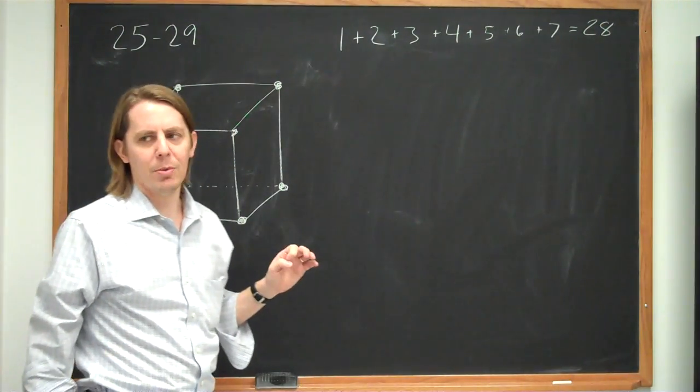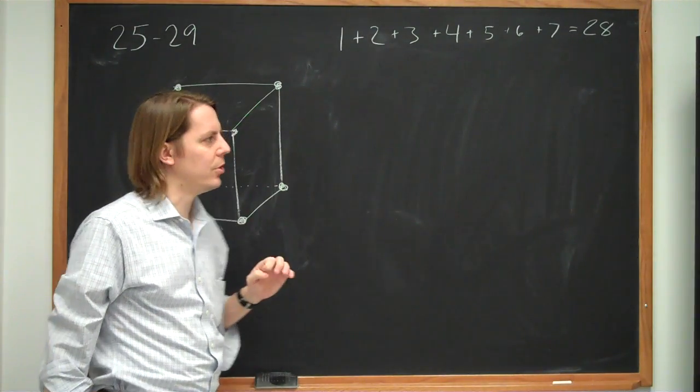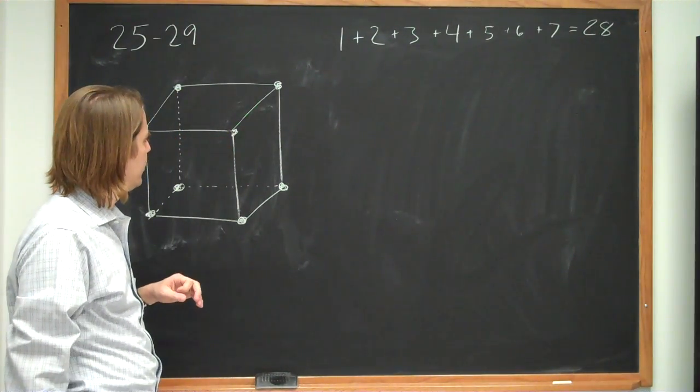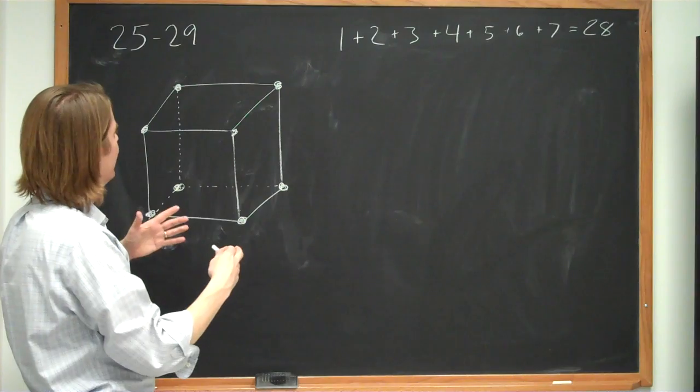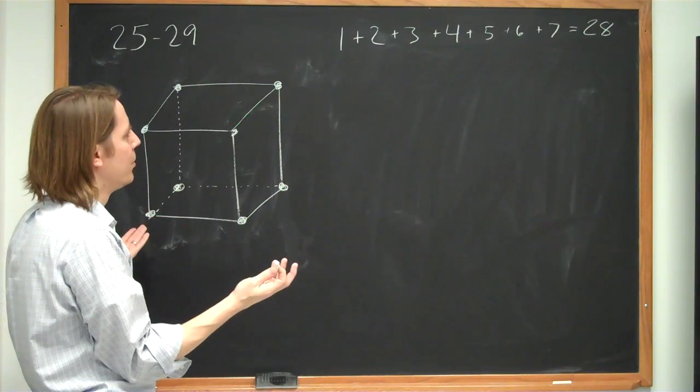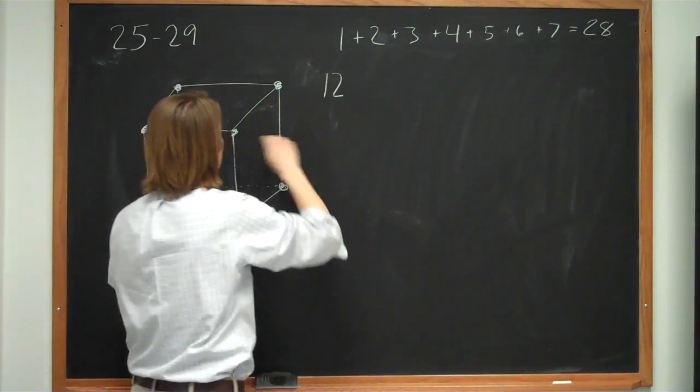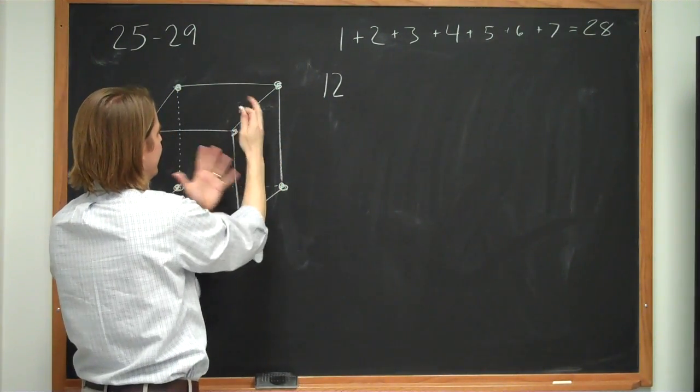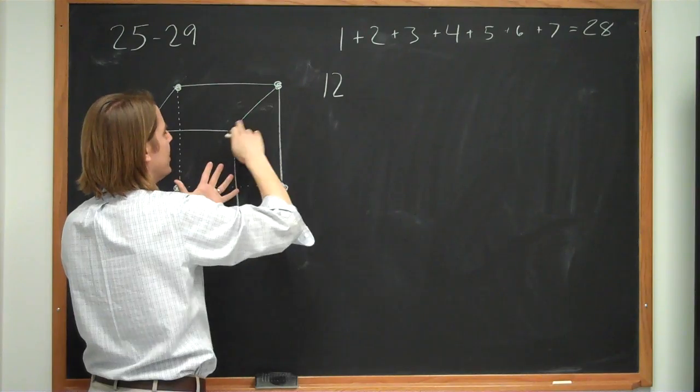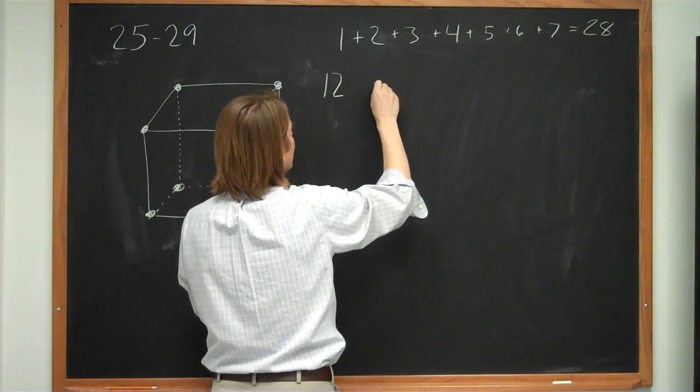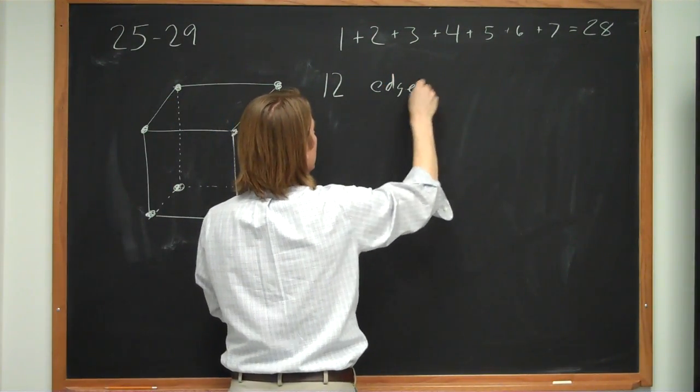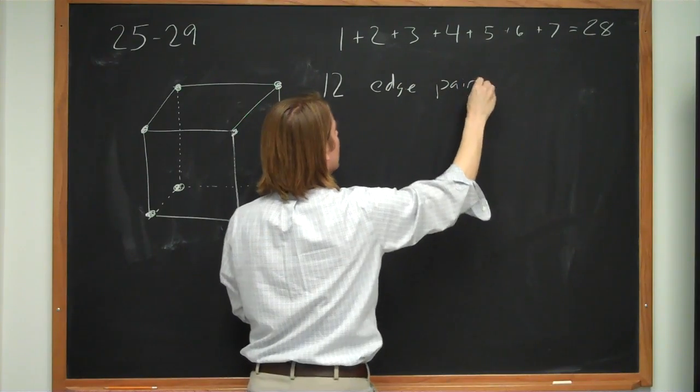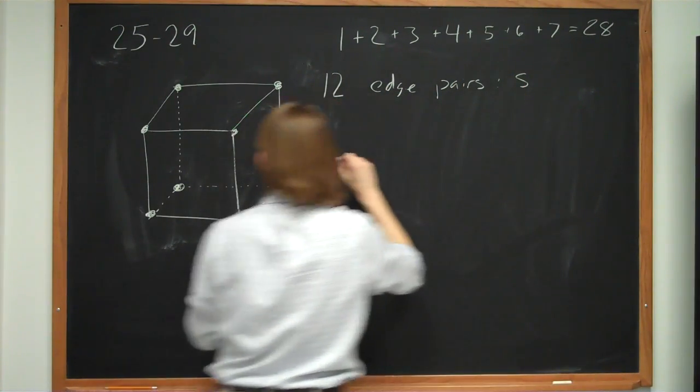But that's the hard way to do this problem. In this case, many of the pairs are the same. So what we should do is just count the types of pairs of charges with a total number. So there are 12, I'm going to call them edge pairs. So if you go to a face and you look at the separation edge, there's 12. Their separation is s, because the side of the cube is s.